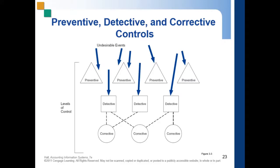Your detective control is, as you can see in the figure, your second line of defense. These are devices, techniques, and procedures designed to identify and expose undesirable events that elude the preventive controls — those that could not be prevented by your preventive controls, or those that slipped past them.